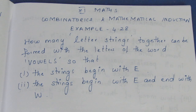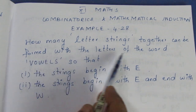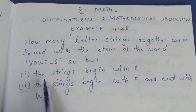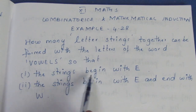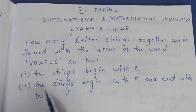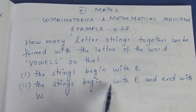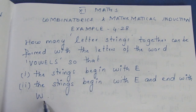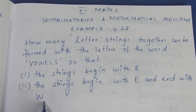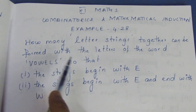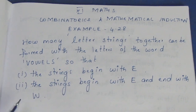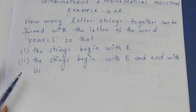How many letter strings can be formed with the letters of the word VOWELS? In the first condition, the string begins with E. In the second condition, the string begins with E and ends with W.